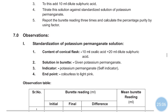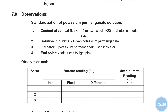For observations during standardization of KMnO4: in the conical flask take 10 ml oxalic acid plus 10 ml dilute sulfuric acid. In the burette take KMnO4. The indicator is potassium permanganate itself — it acts as a self-indicator. The end point is a change from colorless to light pink. Take three readings for standardization.